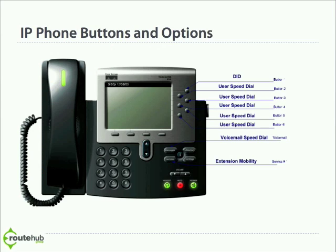Here's an example of a 7960 IP phone. We're going to talk about some of the buttons and options on this phone for reference. Here we have our handset, which is where we can obviously place calls. Here is the indicator — whenever there's a new call coming in or you got a new voicemail, this will actually turn red.